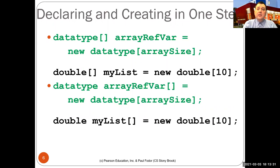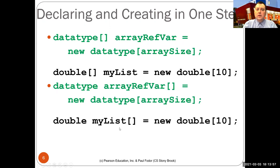You can declare and create the array in one step: declare the array reference and immediately assign it a new array of the desired size. For instance, 'double[] myList = new double[10]'. The other style with brackets after the variable name is still allowed but not preferred.